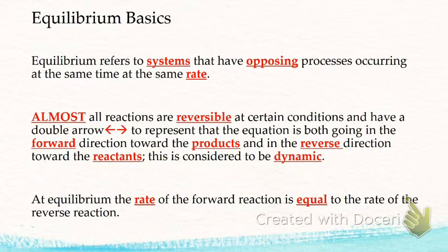The same rate doesn't necessarily mean they're making the same amount of product or they have the same concentrations when they're at equilibrium, but they're happening at the same rate. So an example of that would be, has anybody ever had or seen the little terrariums that have the enclosed ecosystem that you never have to add any water to or food? It's all enclosed, and everything in there just keeps existing because it's a closed system.